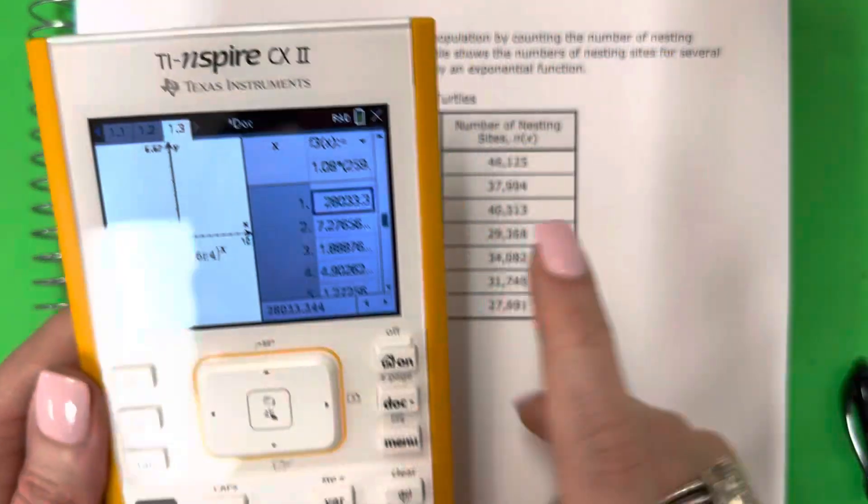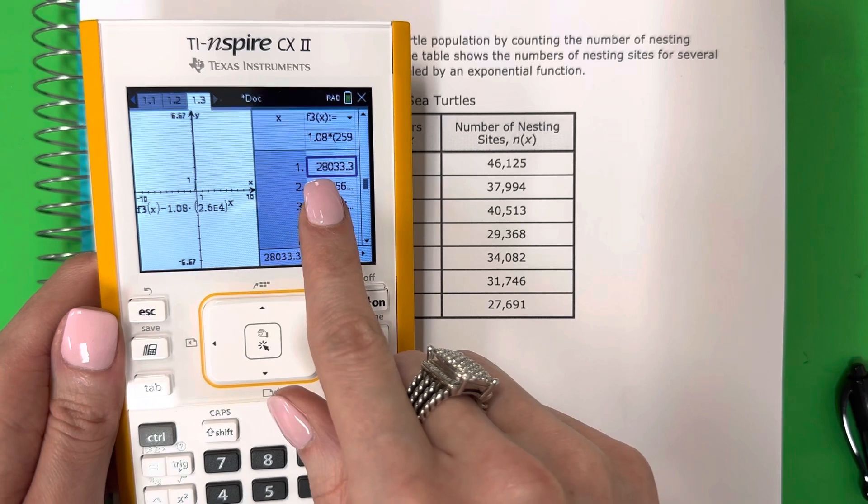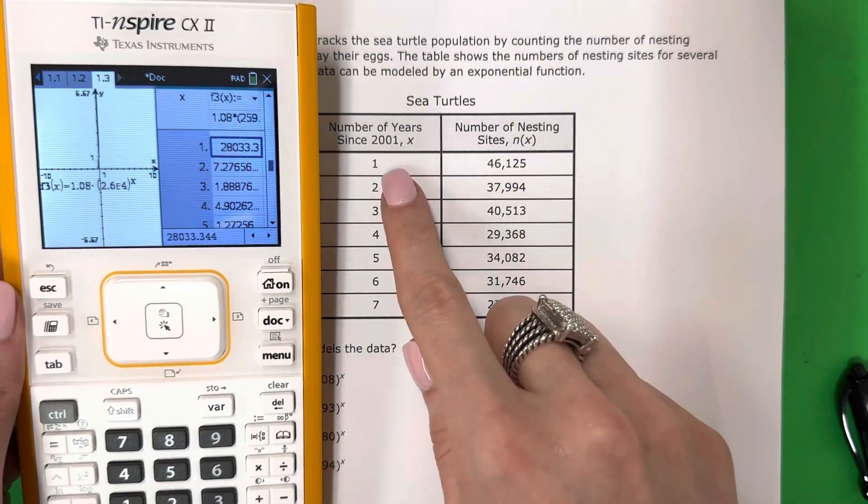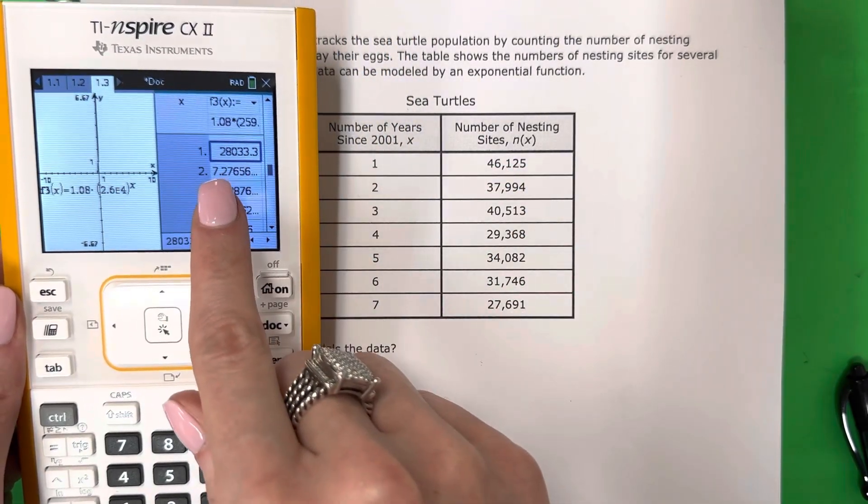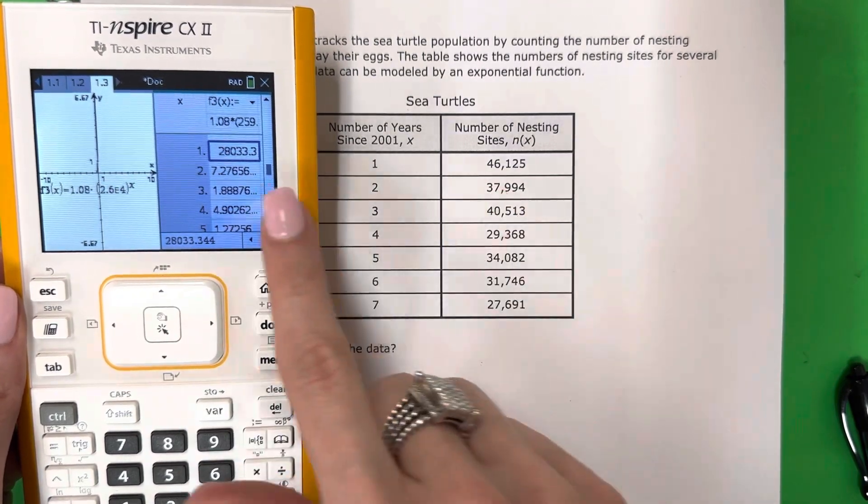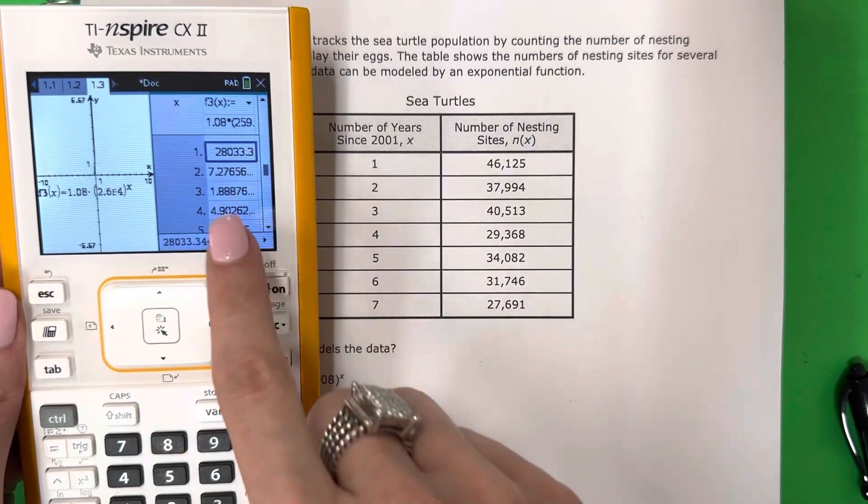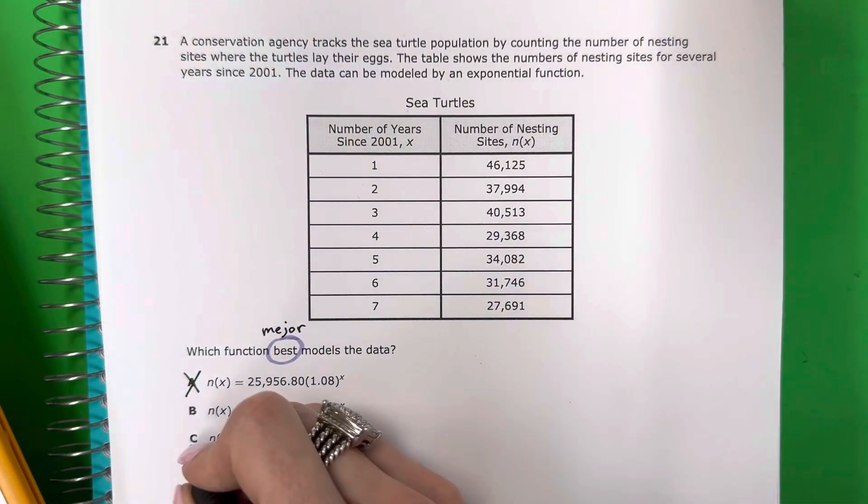Let's go ahead and do control T. So here, 28,000. Aquí 28,000. Here, 46,000. This is not good. No es bueno. And then 7.27. This does not look good. No se miran muy bien. So this is not good. B is better. La B es mejor.